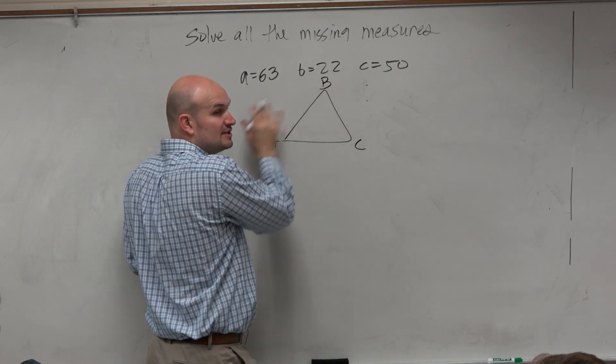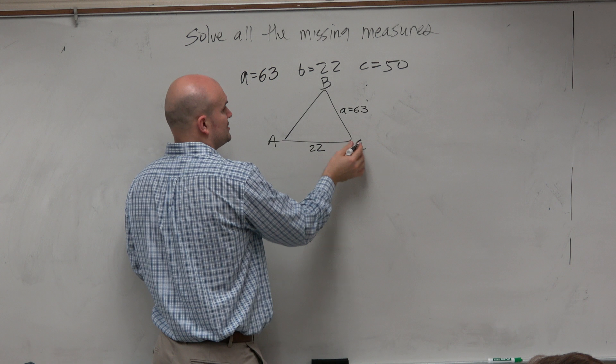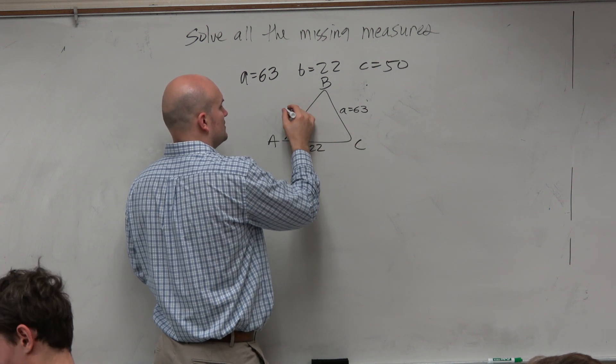Notice these are not degrees, so these are actually measurements. So A is equal to 63, B is equal to 22, and C is equal to 50.